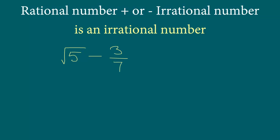This time we have square root 5 minus 3 over 7. So here we have an irrational number, minus sign, and a rational number. A rational number doesn't have to be just an integer.